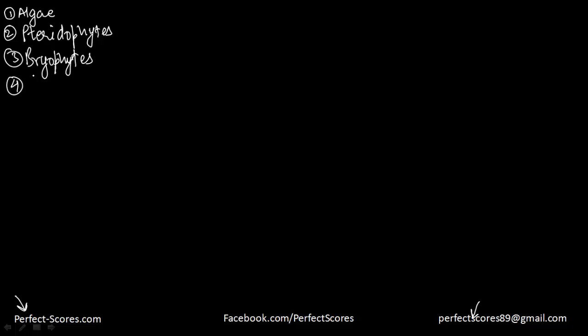We have been doing the plant kingdom classification and so far we've discussed five categories of plants. We have done algae, pteridophytes, and bryophytes. The previous video was on gymnosperms — gymnosperms are called so because 'gymno' means naked and 'sperm' means seed. So naked seed means there is no covering outside the ovule and it develops exposed.